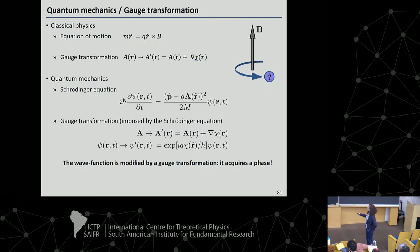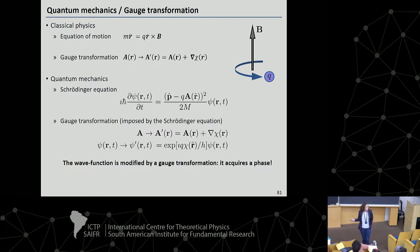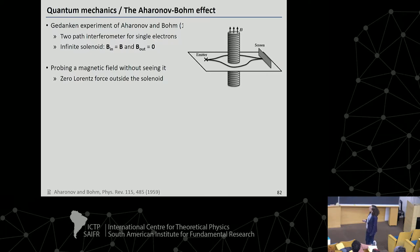Of course, the phase contains the scalar potential. It might sound strange — can we see this phase? Is it something physical? Is the vector potential real? For that I will present what is called the Aharonov-Bohm effect.